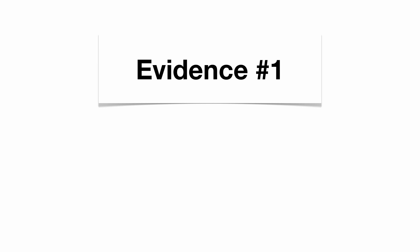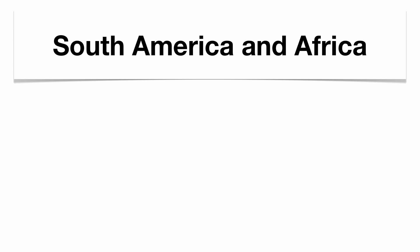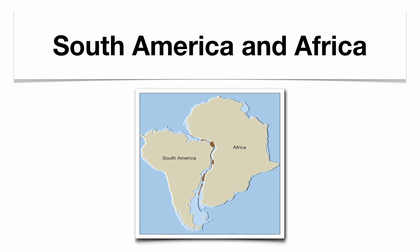Wegener's first piece of evidence is that he focused on the coastlines of certain continents and noticed that they look like they fit like puzzle pieces. He specifically focused on South America and Africa, and saw that their coastlines look like they fit together.